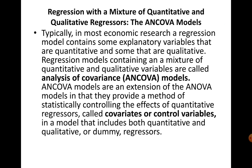ANOVA models with only qualitative variables are more common in sociology, politics, and anthropology. In economics, we most often have a mixture of quantitative and qualitative variables. When a regression model contains both, we call it an analysis of covariance model, or ANCOVA model. ANCOVA is an extension of ANOVA that controls for the effects of quantitative regressors, which are called covariates or control variables.